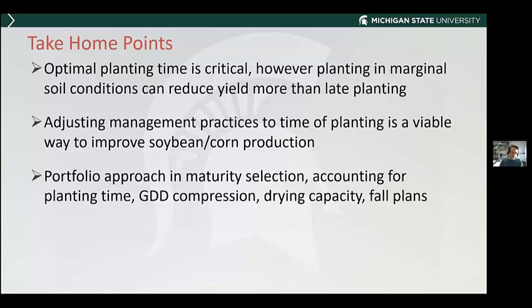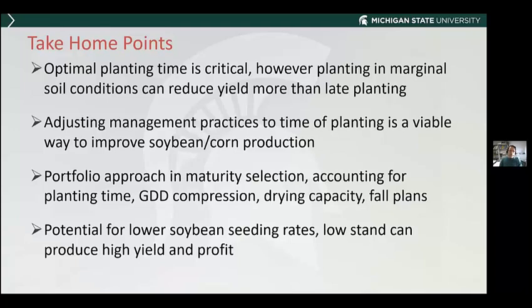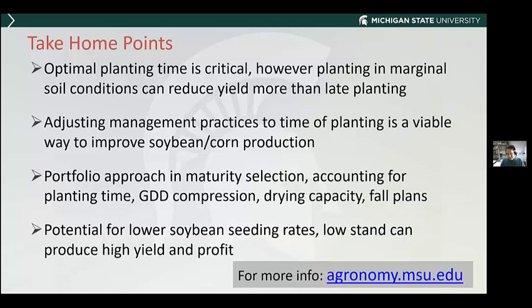Lastly, and probably most importantly, there is real potential for lowering soybean seeding rates. A lot of our research and work from other universities supports that. Even if stands get lower, think carefully about replanting versus interplanting — really low stands below 50,000 might still be okay for soybeans. Here is a link to our website, agronomy.msu.edu, where you can find a lot more information on all of this research. Back to you Mike — I think we're out of time, so we can come back to questions toward the end.